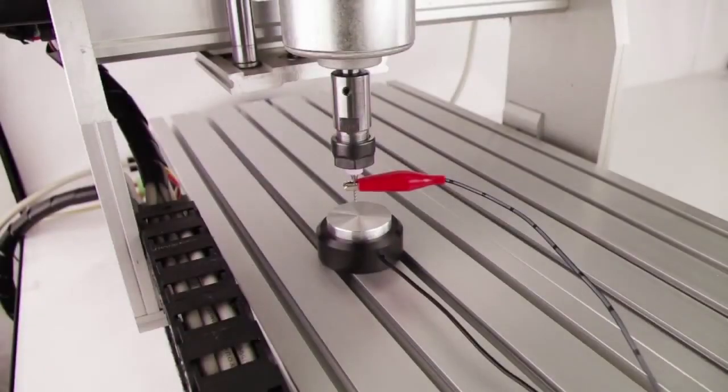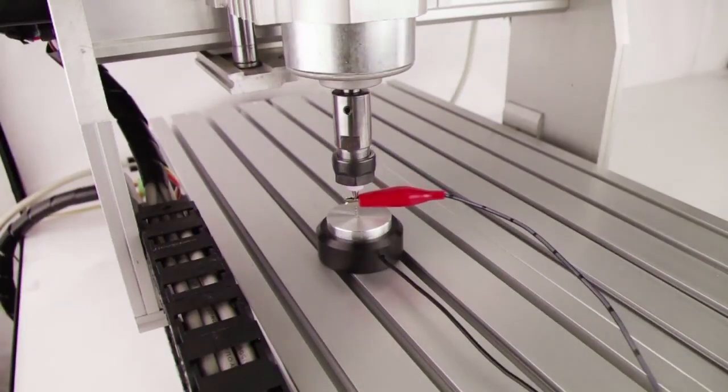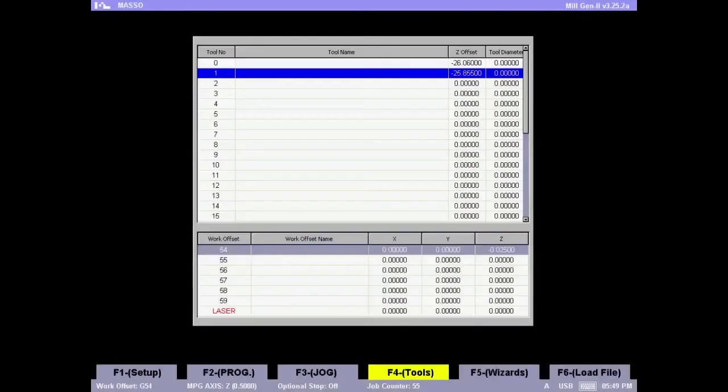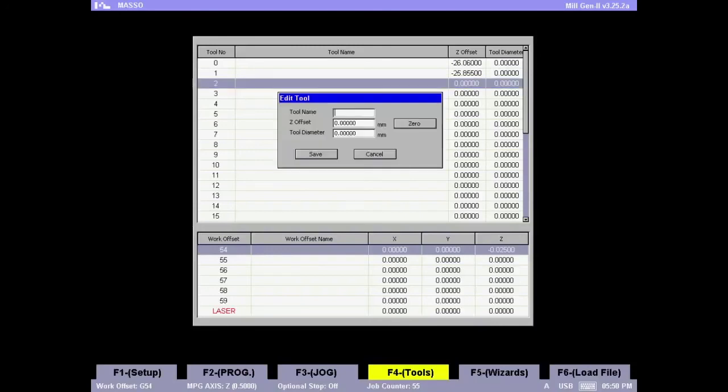So let's run the program. Press Control R to start. So the tool automatically stops as soon as it touches the plate. Now we will go to the F4 screen. Select the tool, press Enter to open the window.